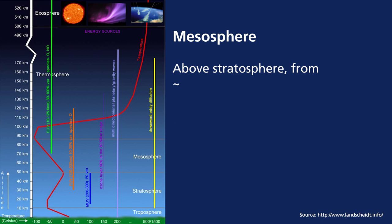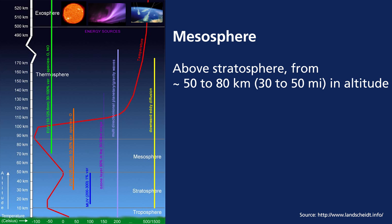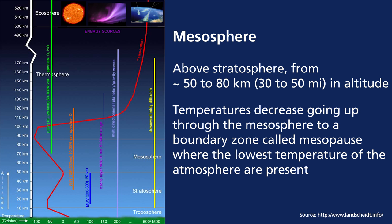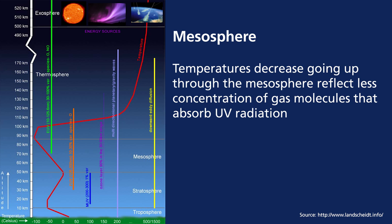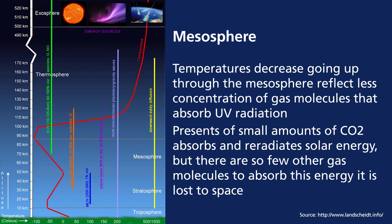The mesosphere is above the stratosphere, from approximately 50 to 80 km in altitude. Here temperatures again decrease upward through the mesosphere to a boundary zone called the mesopause, where the lowest temperatures in the atmosphere are present. Temperatures decrease going upward through the mesosphere because of the lower concentration of gas molecules that absorb UV radiation — gas molecules having mass tend to go downward, so there are fewer gas molecules to absorb UV radiation at this altitude. This is also related to the presence of small amounts of CO2 which absorbs and re-radiates solar energy.